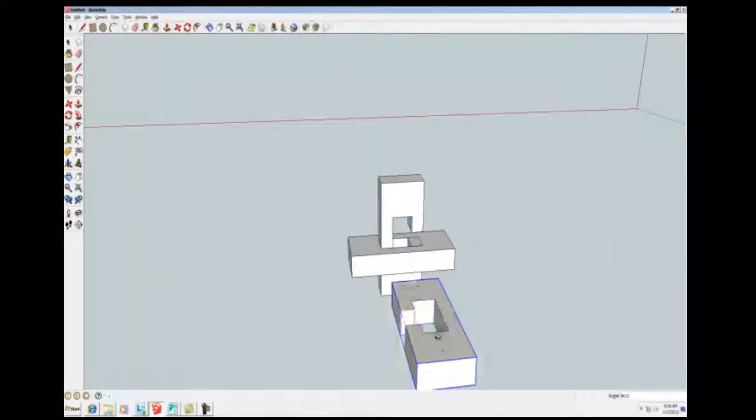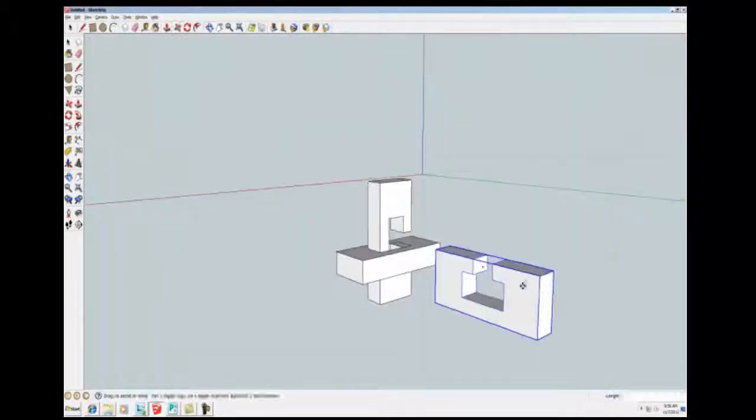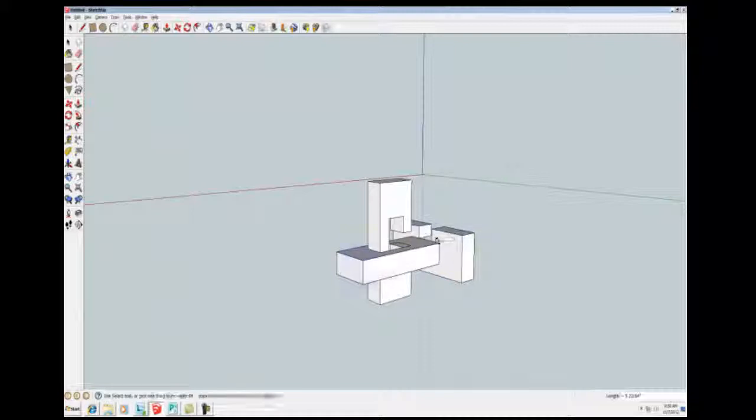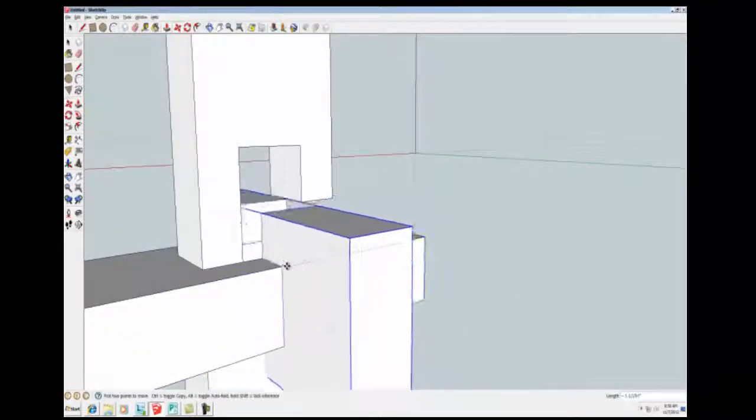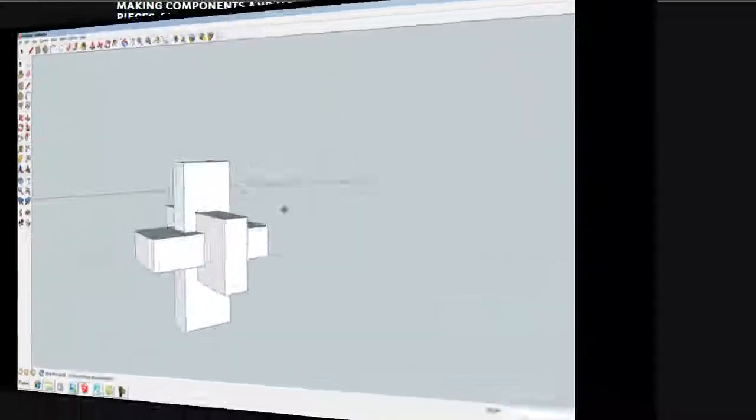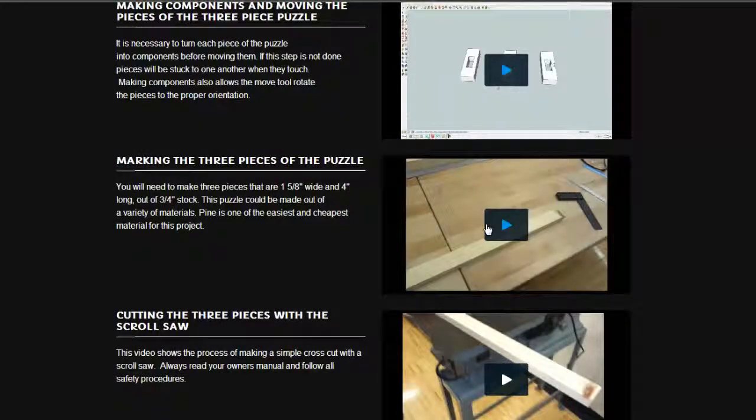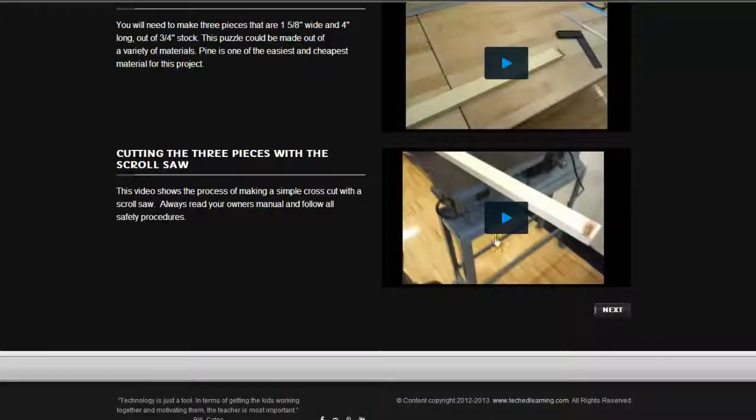This one goes over making the three pieces. This one goes over putting them together. You'll find that there's 14 videos in total that go over the different steps in the shop using a ruler, the square, the machines, and whatnot.